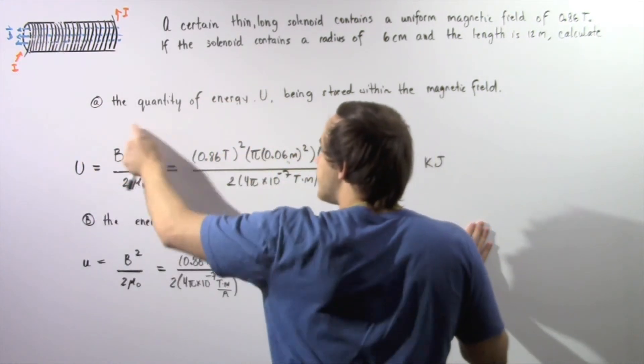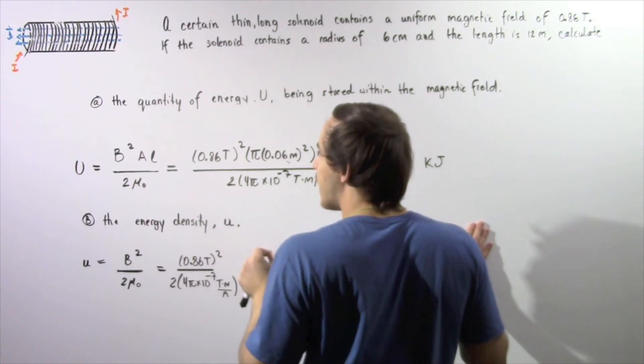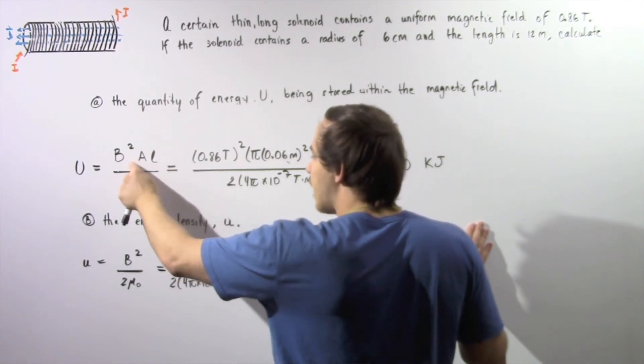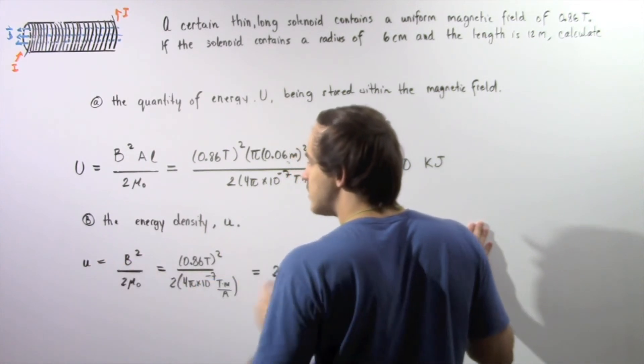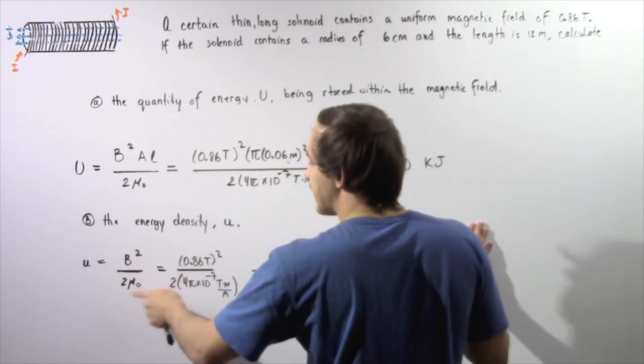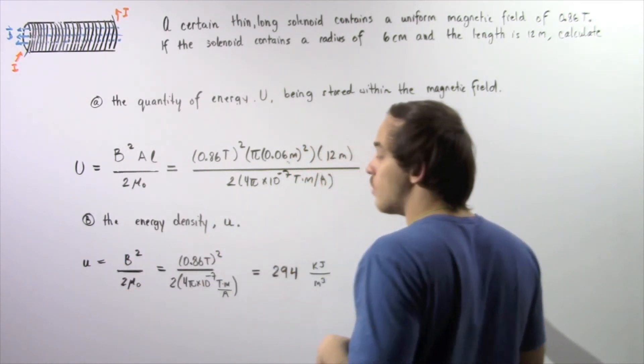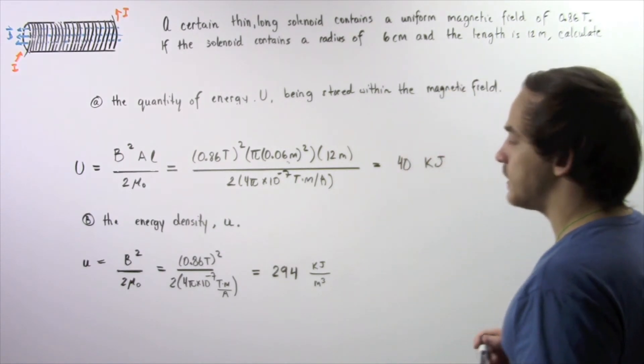we divide this by A multiplied by L. This will cancel out and our energy density given by lowercase u is equal to B squared divided by 2 multiplied by the permeability of free space.